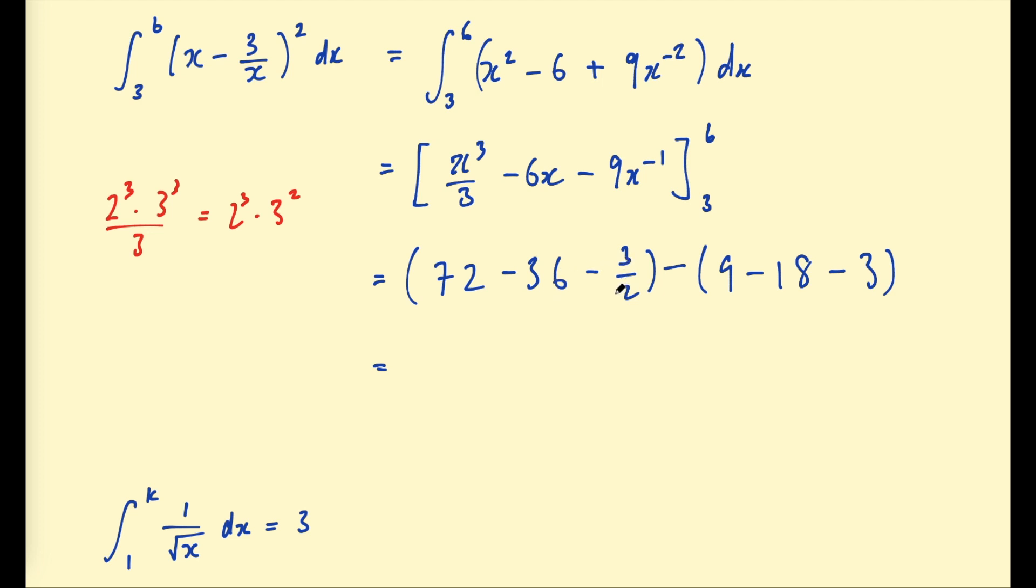34 and a half subtract negative 9 take 3 negative 12. That would be plus 12. So then we get 46 and a half.